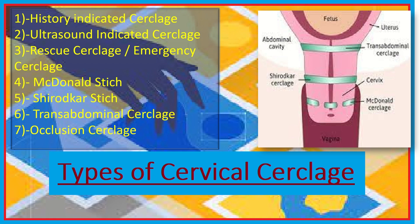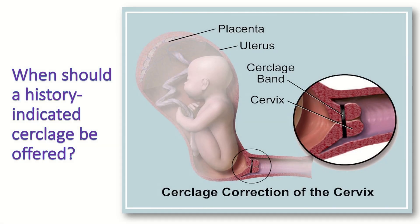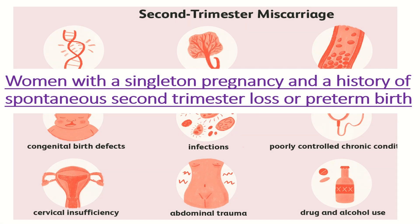History-indicated cerclage is the insertion of cerclage based on factors in the woman's obstetric or gynecological history which increase the risk of spontaneous second trimester loss or preterm birth. Women with singleton pregnancies and three or more previous preterm births should be offered a history-indicated cervical cerclage.